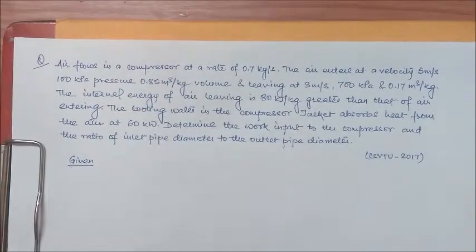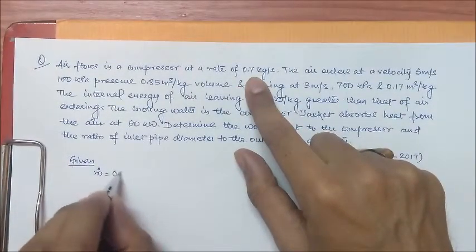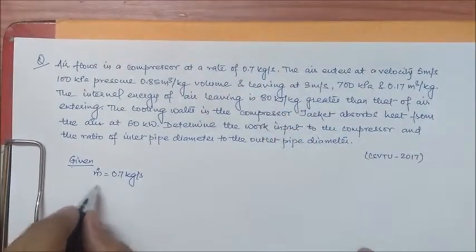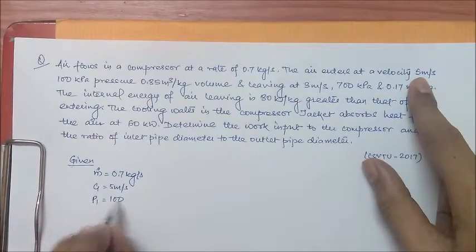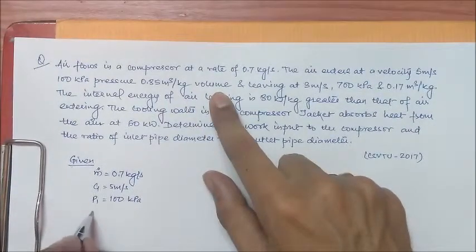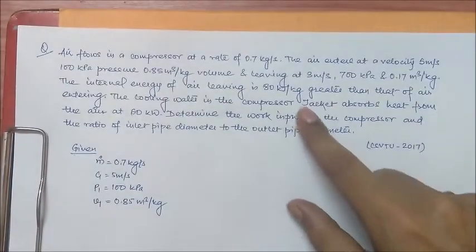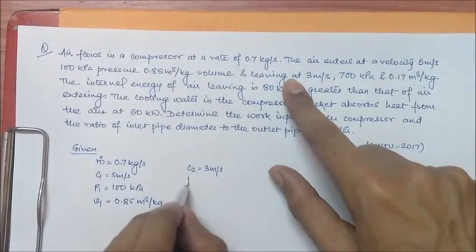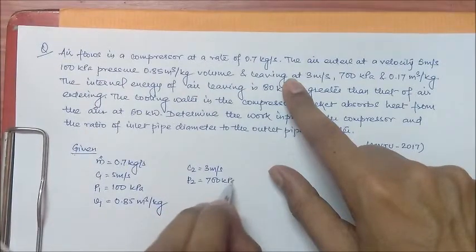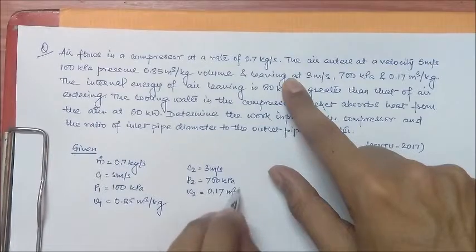Let's start with the given values. Mass flow rate M dot is 0.7 kg per second. Inlet velocity C1 is 5 m per second, inlet pressure P1 is 100 kPa, and specific volume V1 is 0.85 m³ per kg. At the outlet, C2 is 3 m per second, P2 is 700 kPa, and specific volume V2 is 0.17 m³ per kg.